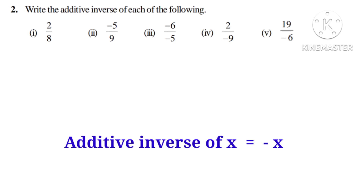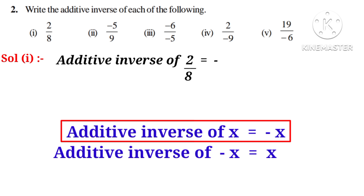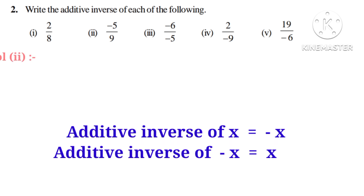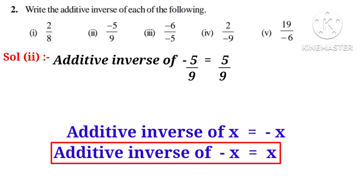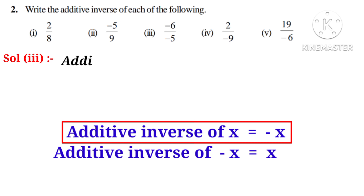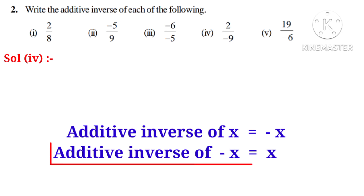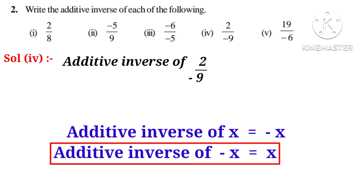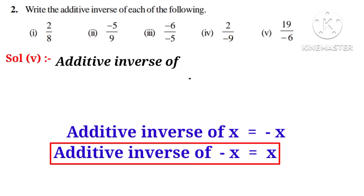Now let us do the next problem: write the additive inverse of each of the following. Additive inverse of x is equal to minus x. So additive inverse of 2 by 8 is minus 2 by 8. Additive inverse of minus x is equal to x. So additive inverse of minus 5 by 9 is equal to 5 by 9. For minus 6 by minus 5, the two negatives cancel giving 6 by 5, so additive inverse is minus 6 by 5. Additive inverse of 19 by minus 6 equals 19 by 6.